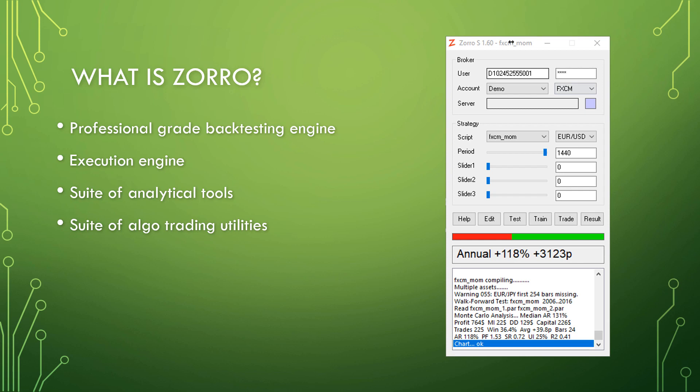So first, what is Zorro? Zorro is an automated trading platform which actually encompasses quite a lot of different things, including a professional-grade backtesting engine with support for walk-forward analysis and parameter optimization. It's also an execution engine able to trade with multiple brokers and asset classes out of the box, a suite of advanced analytical tools including statistics, artificial intelligence, and signal processing, and a suite of utilities for algo traders including tools for getting data from multiple sources and controlling other programs.